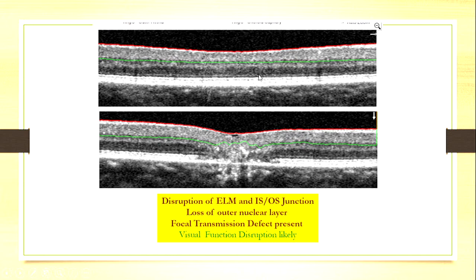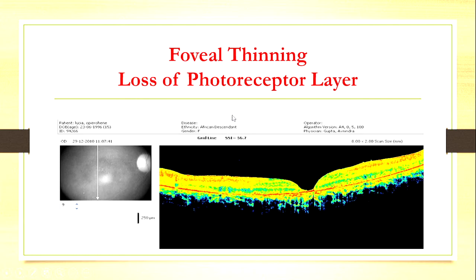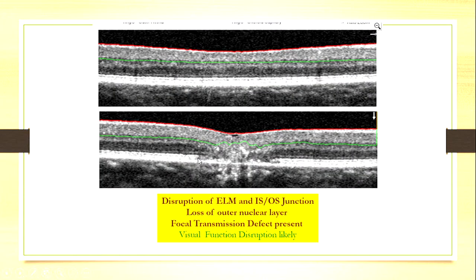You see all the layers are intact here — the ELM, the external limiting membrane, the ISOS junction, the RPE. But look over here: this outer nuclear layer has atrophied. It's fallen down. The photoreceptor layer is gone. The ISOS junction is not intact. And so, in this situation, there is likely to be a visual deficit.